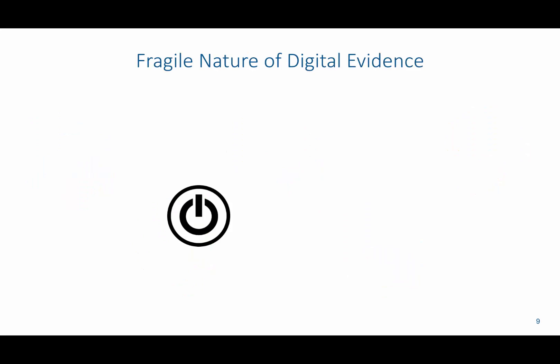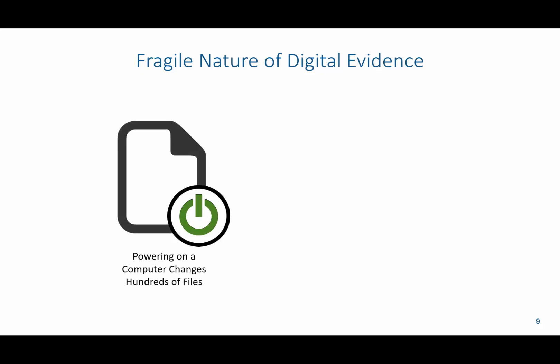Digital evidence is easily altered, damaged, or destroyed. To show the fragile nature of digital evidence: if you were to simply hit the power button, this could modify or alter files on the system, or even wipe some of the files or information you're interested in tracking. We don't just power off devices when we retrieve them — we want to ensure that everything is handled properly to retain the information we need.